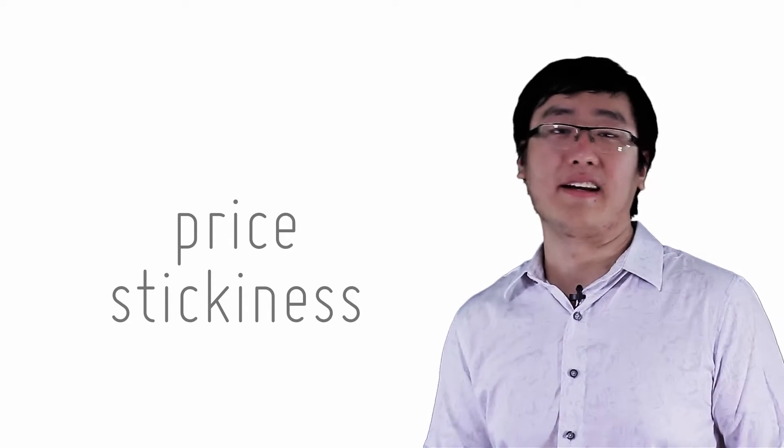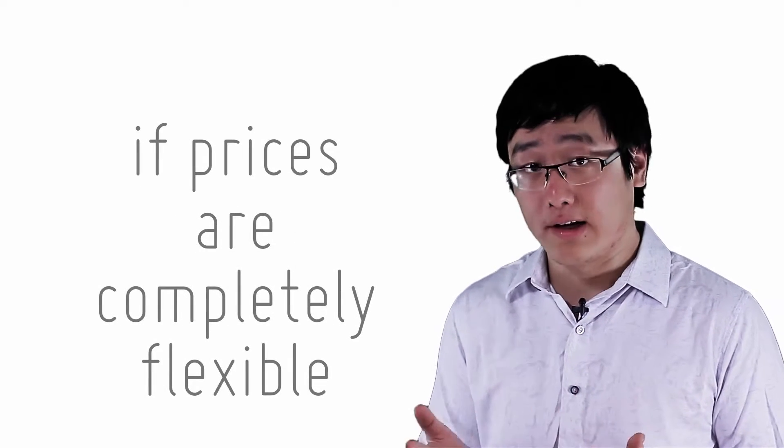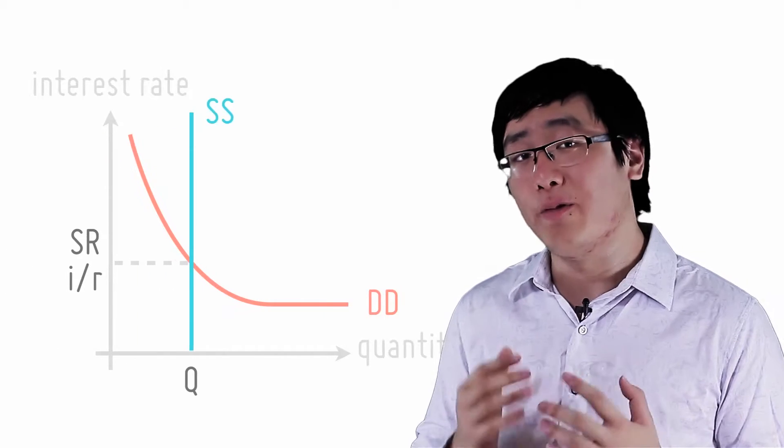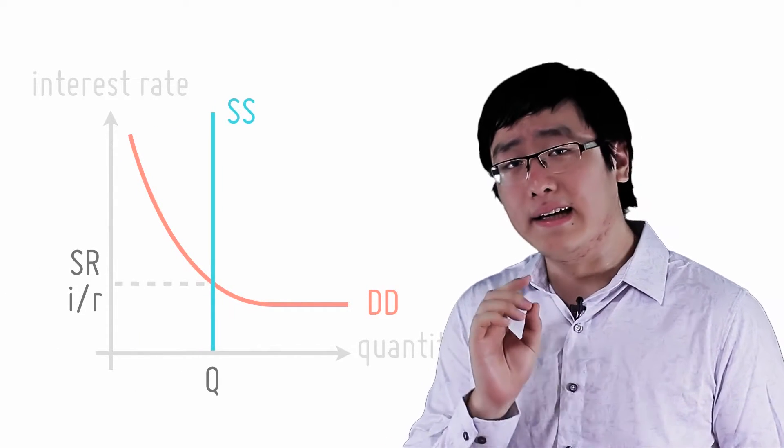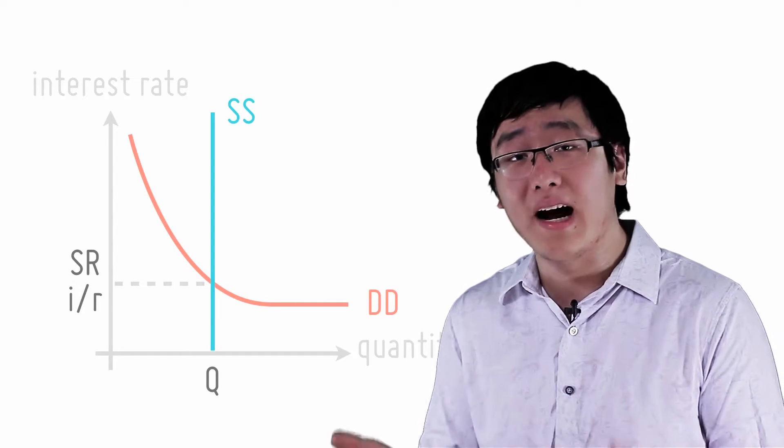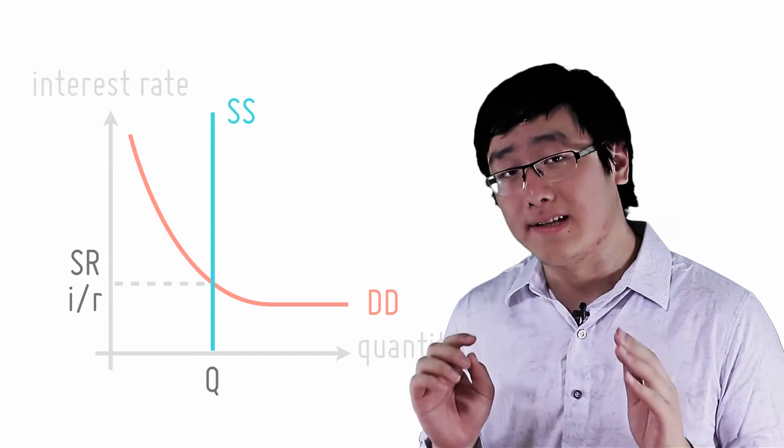The stickiness of prices also affects the effectiveness of monetary policy. If prices are completely flexible, like classical economists believe, then when money supply increases, interest rates do seem to decrease. But the increase in money supply causes price level to increase because there will be so much more money chasing the same amount of goods.